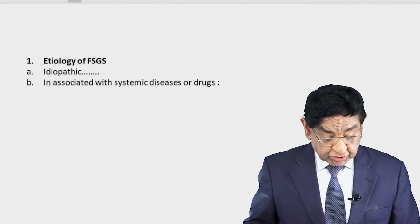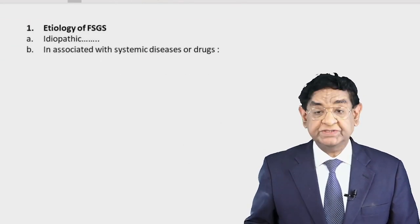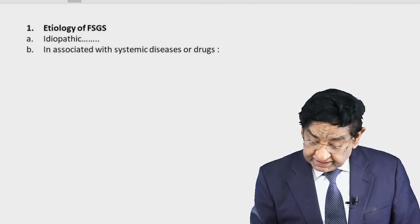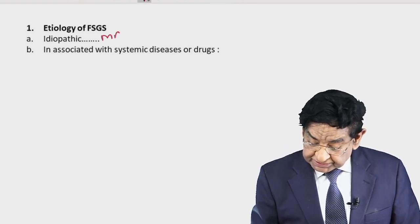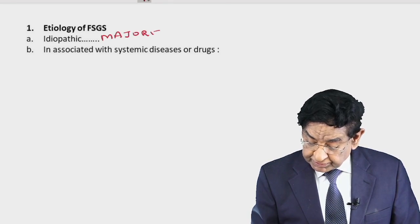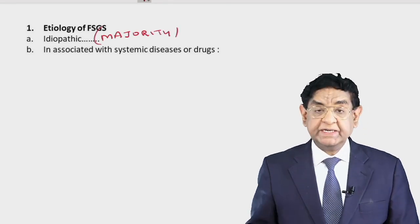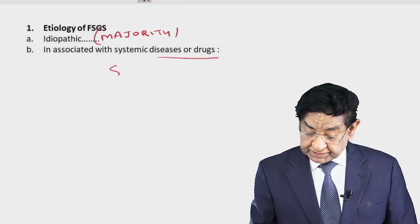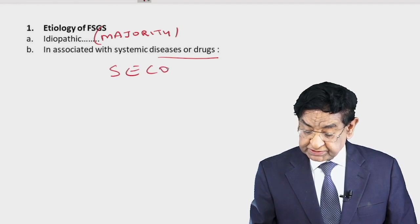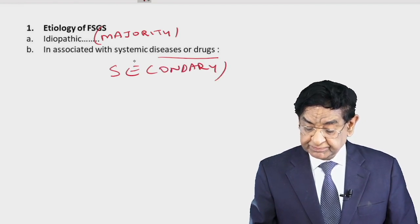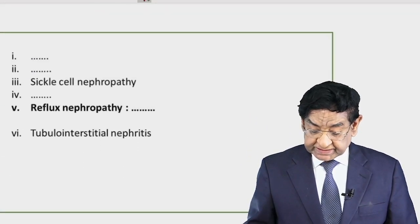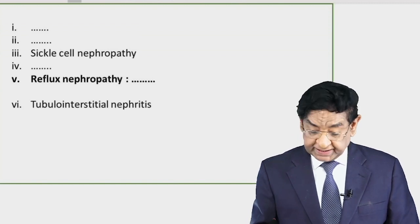Regarding the etiology of FSGS, the majority of cases are idiopathic with no identifiable reason. However, at times it may be associated with certain diseases or drugs — the so-called secondary causes. One very important secondary cause is HIV.